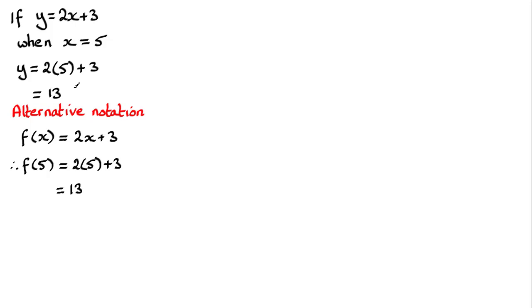If I had f of 1 then it would be 2 times 1 plus 3, total of 5. If I had f of 0 it would be 2 times 0 plus 3, which would end up being 3. So hopefully you get the idea that whatever I write in the bracket here, we would replace the variable, in this case x, with that value.